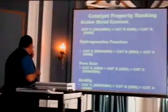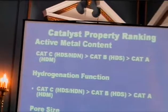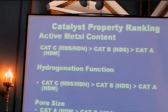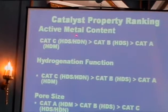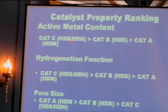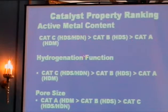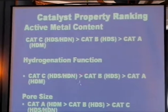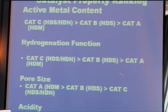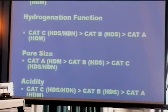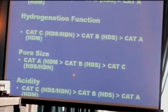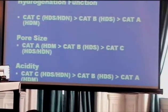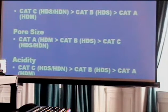The three catalysts vary with regard to their characteristics. With regard to active metal content, catalyst C is greater than catalyst B and catalyst A. With regard to hydrogenation function, catalyst C is greater than catalyst B, which is greater than catalyst A. Acidity: catalyst C is higher than catalyst B and catalyst A.